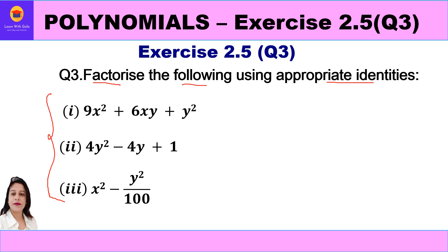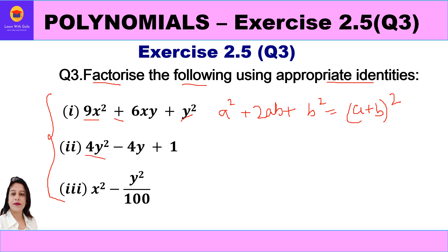We have to factorize these quadratic polynomials using suitable identities. The important question is which identity to use. When we have two square terms with a plus sign, we think of the identity a² + 2ab + b². When we have two square terms with a minus sign in the middle, that is a² - 2ab + b².